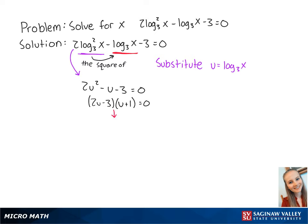Now we have the equations 2u minus 3 equals 0 or u plus 1 equals 0. For the first equation we get u equals 3 halves, and for the second equation we get u equals negative 1.